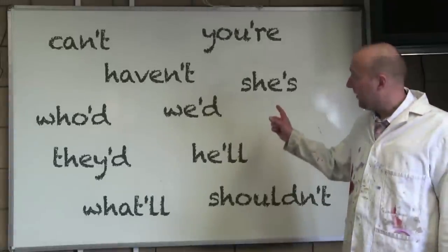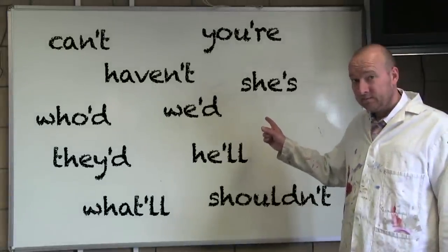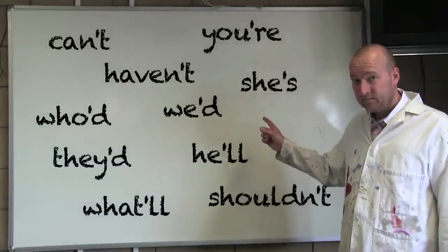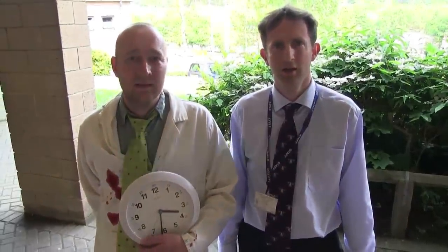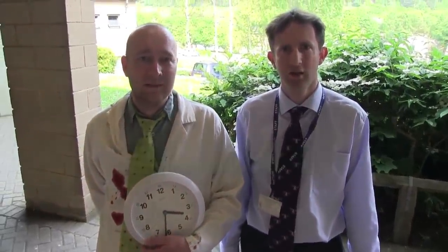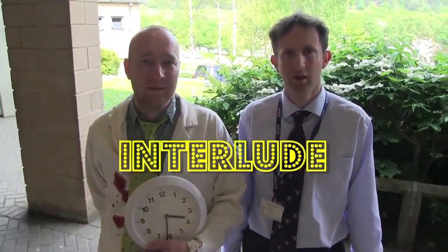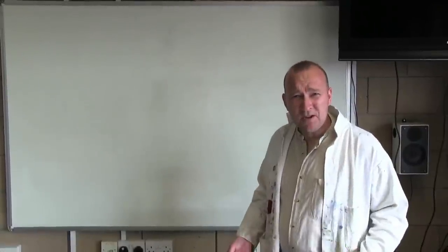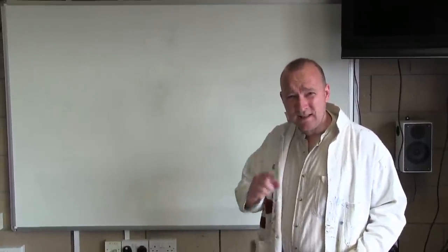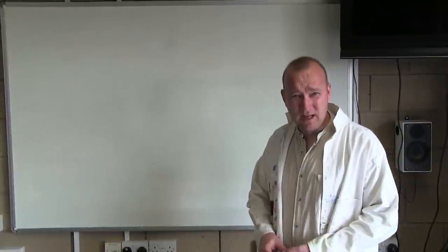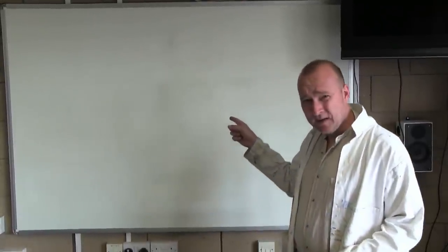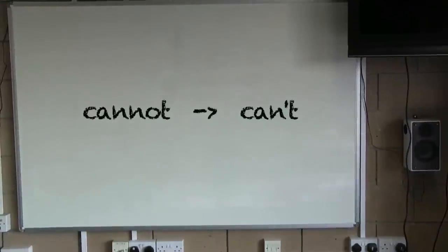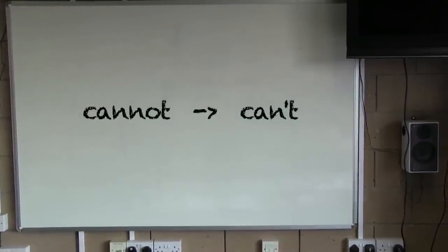Here are some more examples. An apostrophe doesn't have to replace just one letter — it can replace more than one letter. Take a look at this: here, two letters have gone missing.